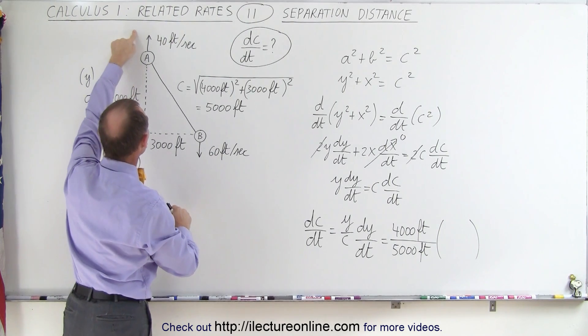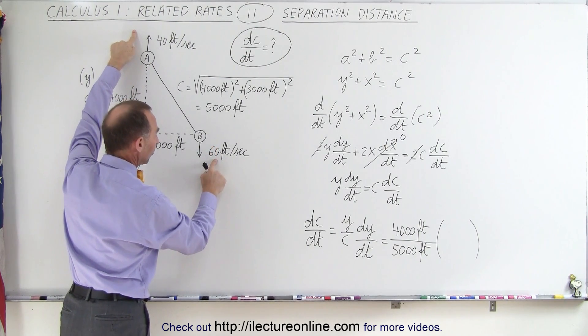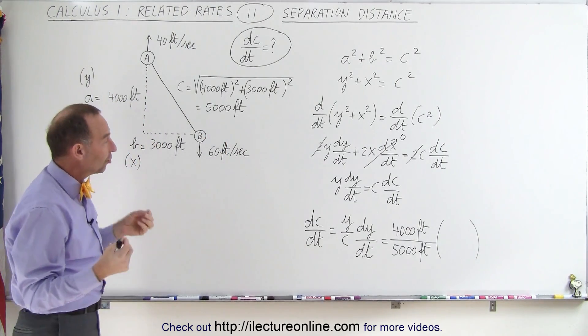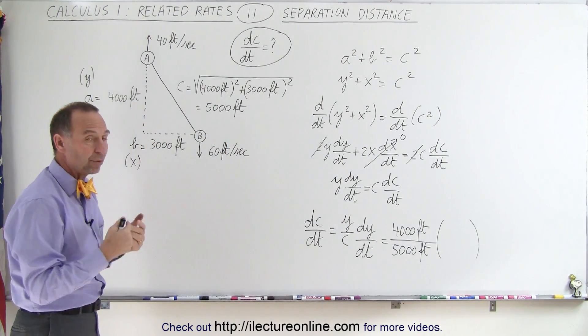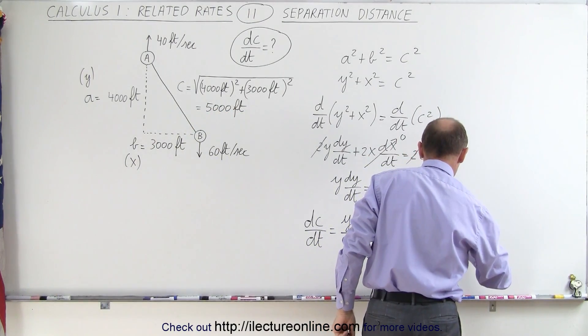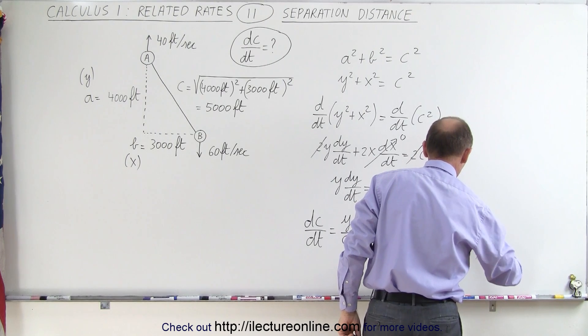Now, since this is going this direction, 40 feet per second, this is 60 feet per second. And we add the two together, that's a separation distance increasing at 100 feet per second in the Y direction. So dy/dt is 100 feet per second.